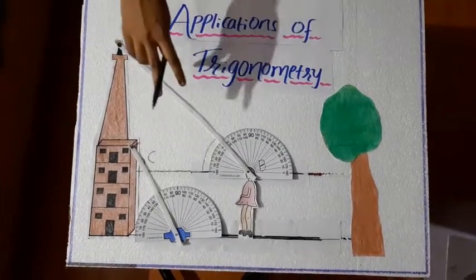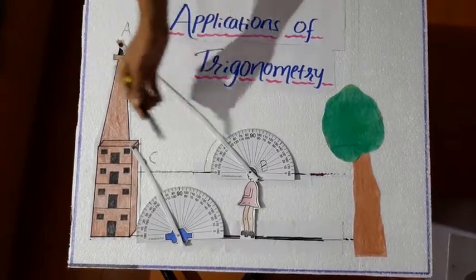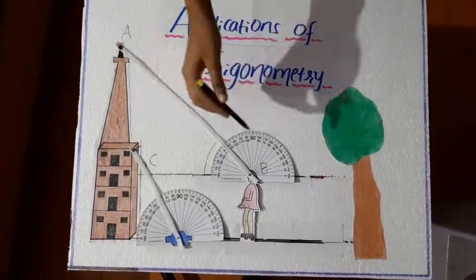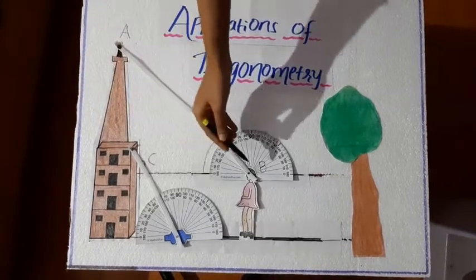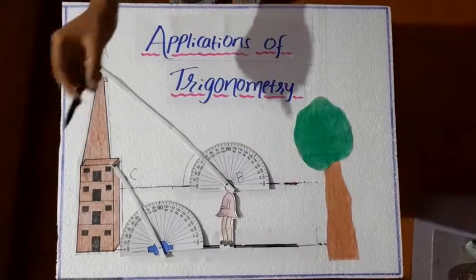By this, if two values among three values are known, then we can easily find out the third one that is CB. That means distance between her house and she. Or the width of the river.